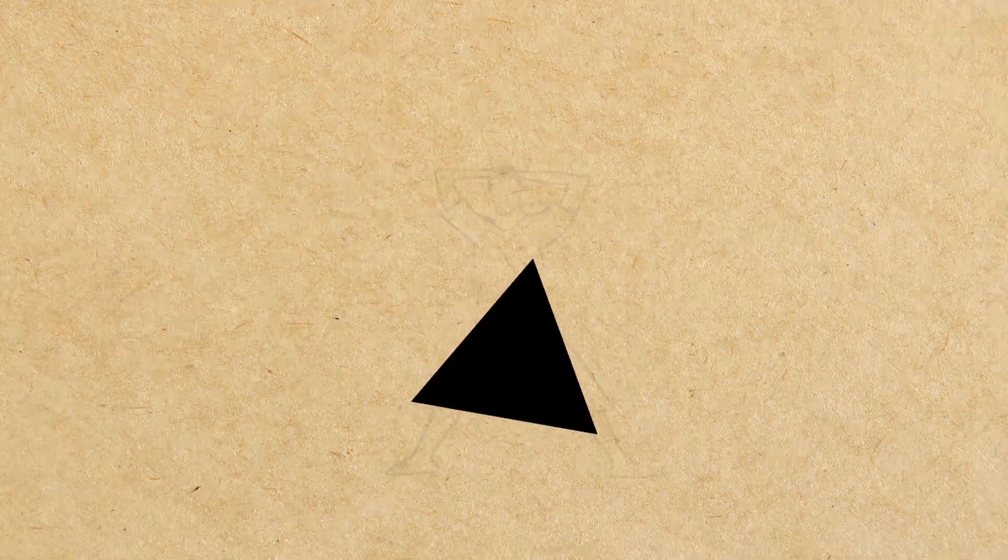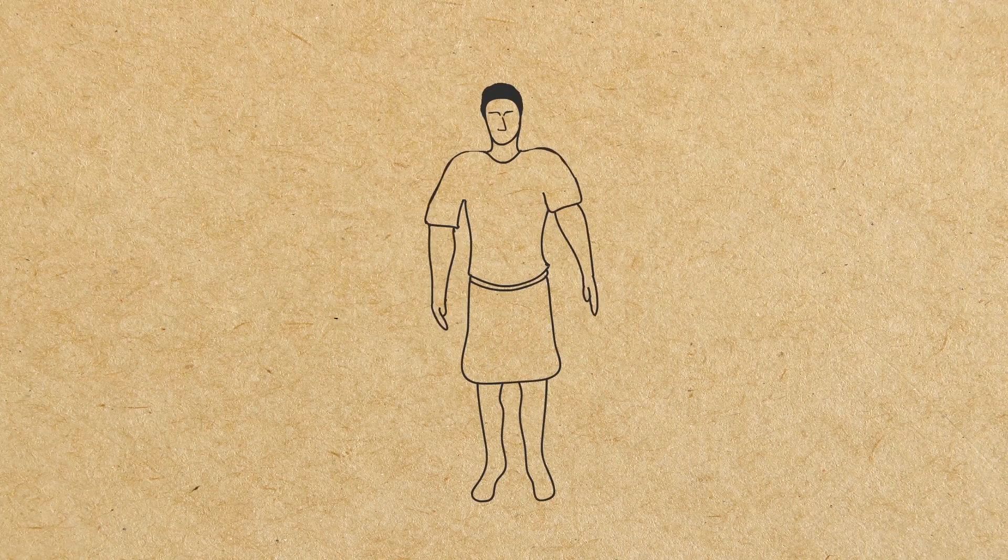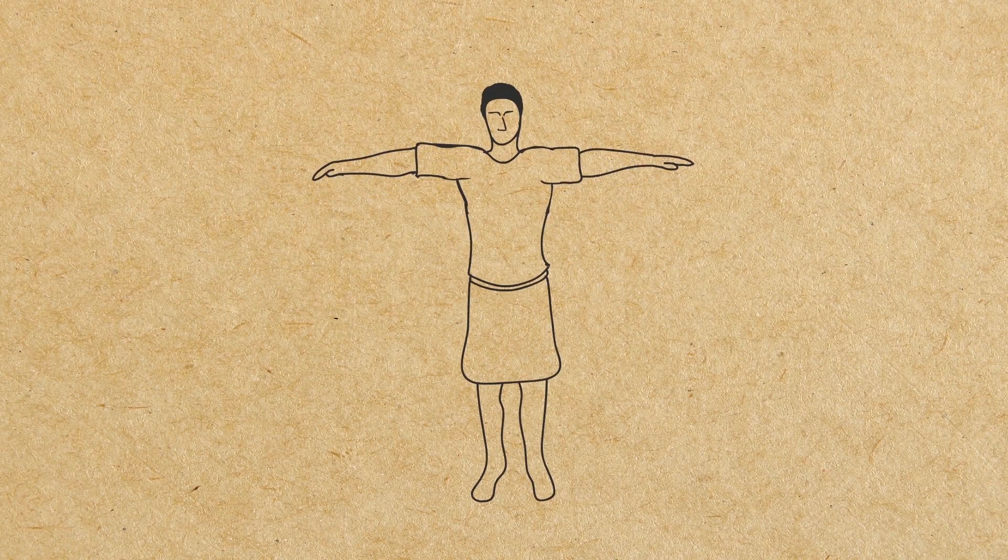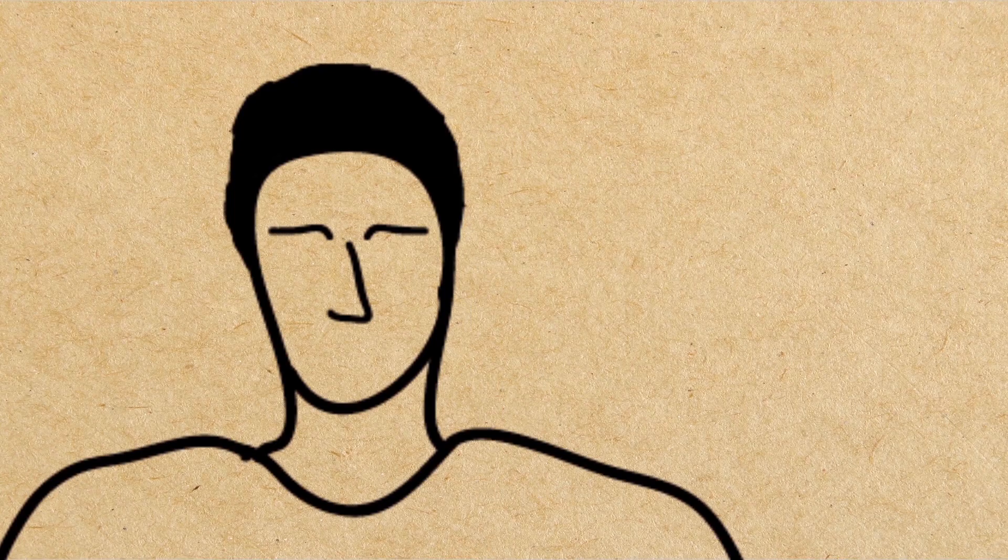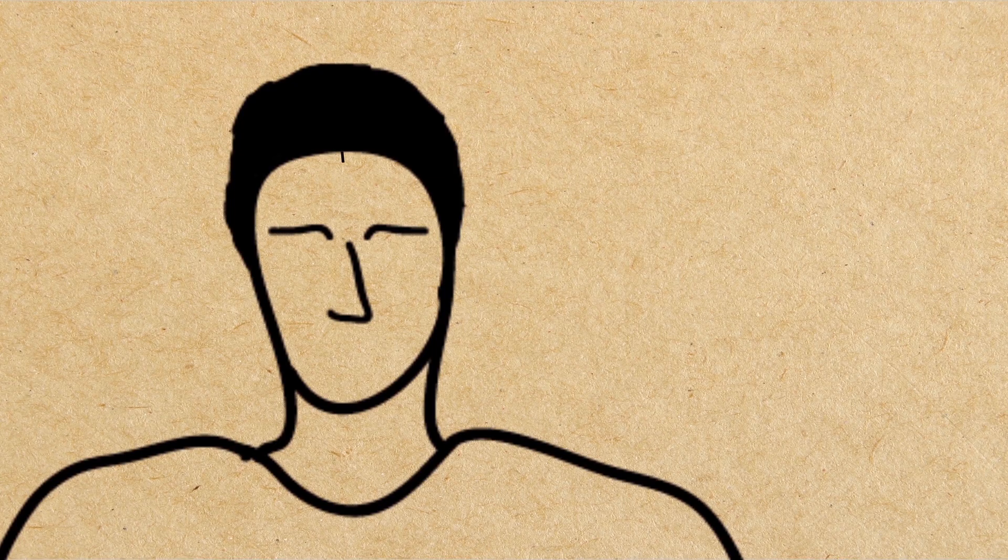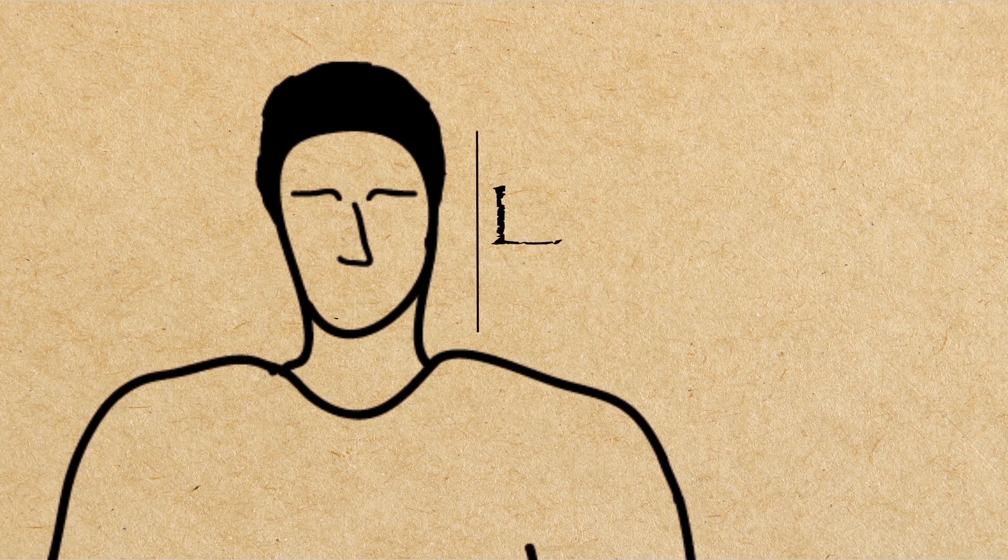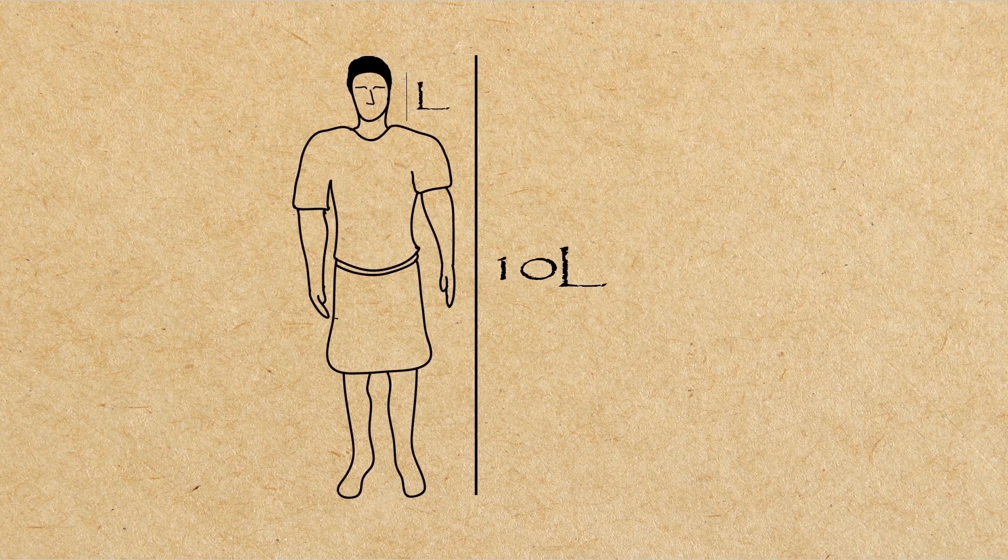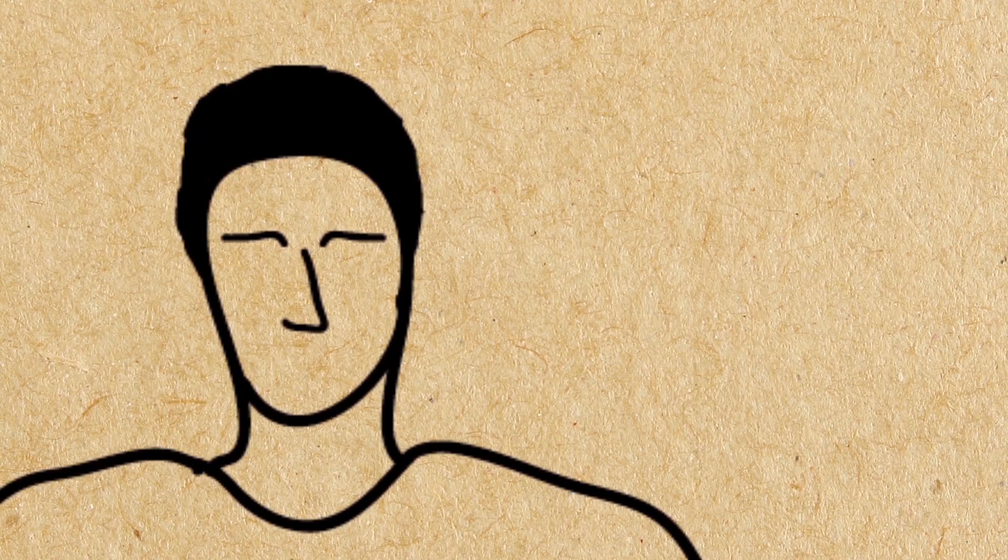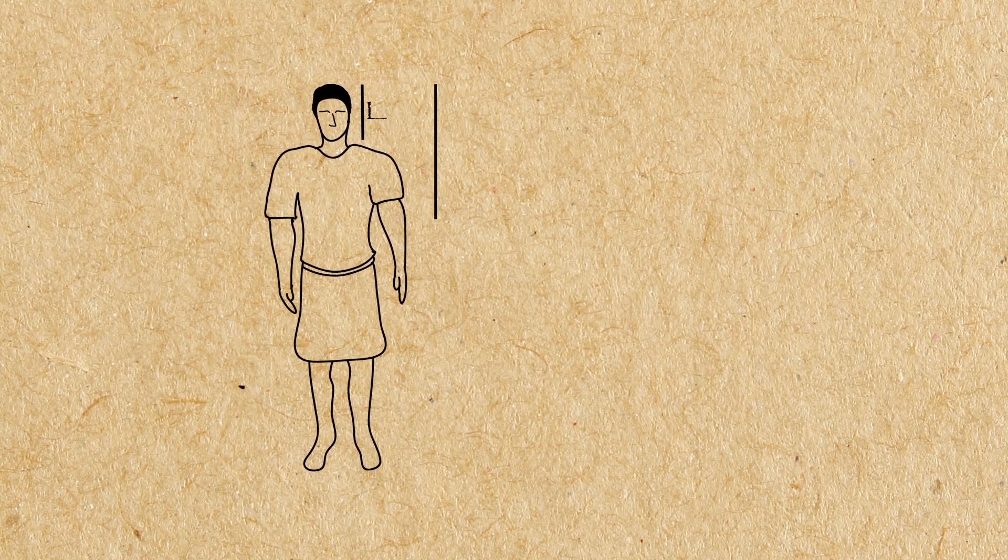These proportions are also given by him. The length of the outspread arms is equal to the height of a man. From the hairline to the bottom of the chin is one-tenth of the height of a man. From below the chin to the top of the head is one-eighth of the height of a man.